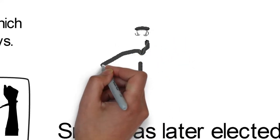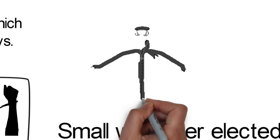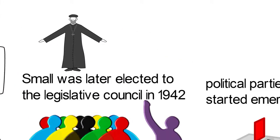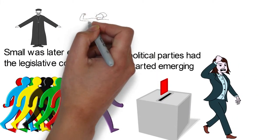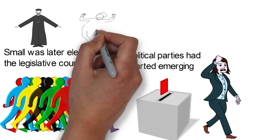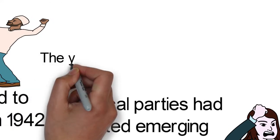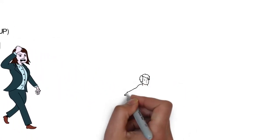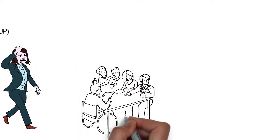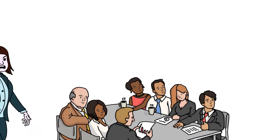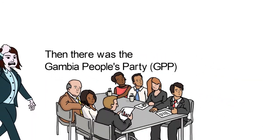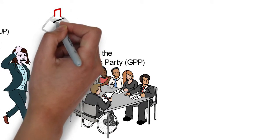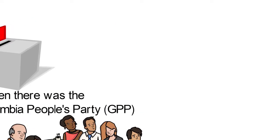The first political party to be formed in the Gambia was in 1951 and was called the Democratic Party. This party was headed by Rev. J.C. Fay. A year later in 1952, the Muslim Congress Party was formed under the leadership of Im Garbar Jahumpa. The year 1952 also saw the founding of the United Party, which led the poll in elections to the Legislative Council in 1954. Then there was the Gambia People's Progressive Party, which existed only for a short while under St. Clair Juve, who died soon after he was defeated in the 1954 polls.